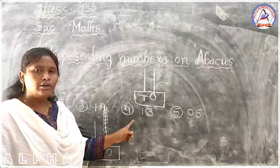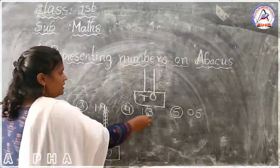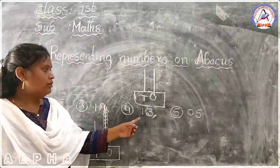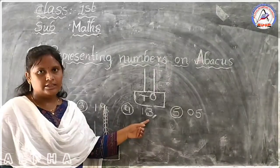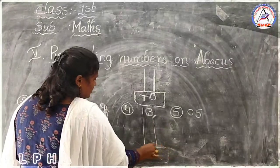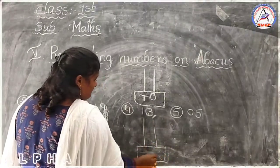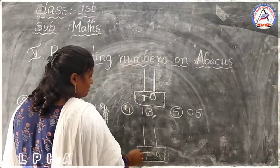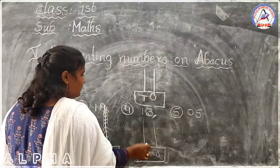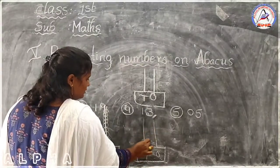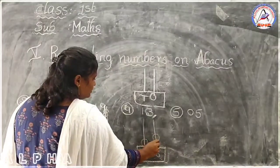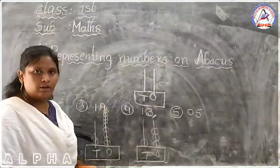Let's come to the fourth example. See here, what is the given number? 13. If it is 13, you have 1 ten plus 3 ones. Let's represent this number on the Abacus. How many tens are there? One. And the ones? 1, 2, 3.